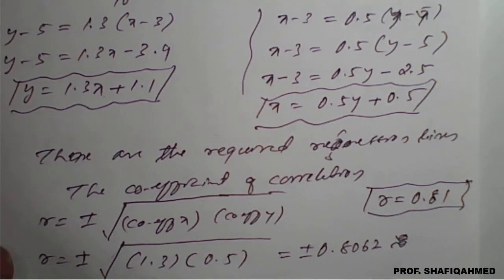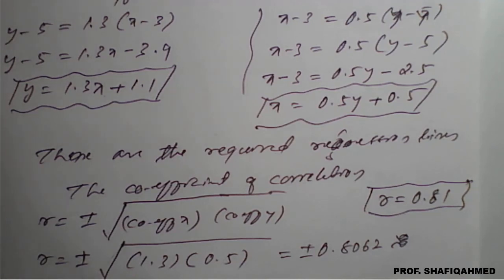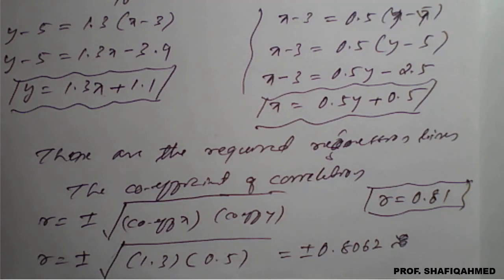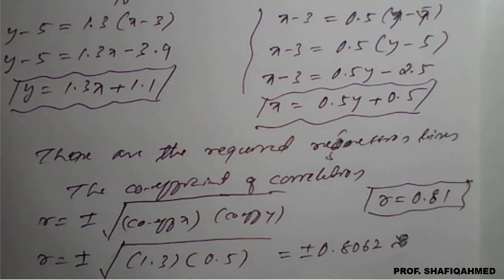So, this is the required coefficient of correlation. This is the example where first we find the regression lines, then the coefficient of correlation — this is the procedure when X̄ and Ȳ are integers. Please subscribe to my channel, put a like, and press the bell icon for more updated videos.